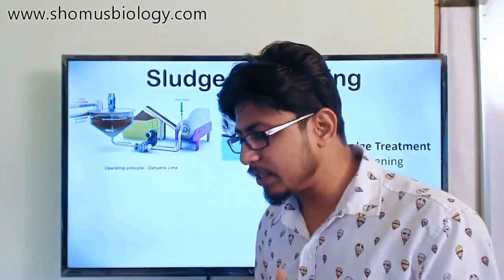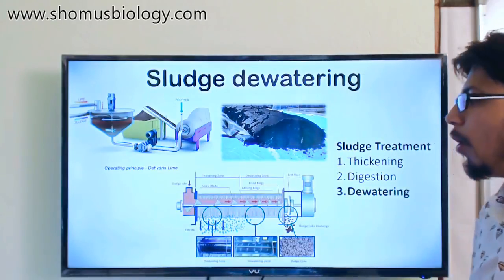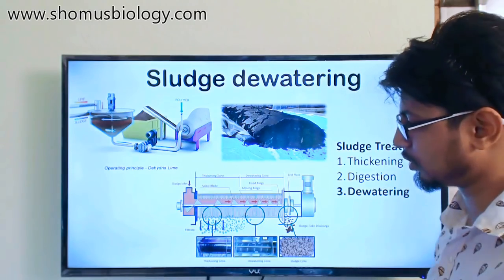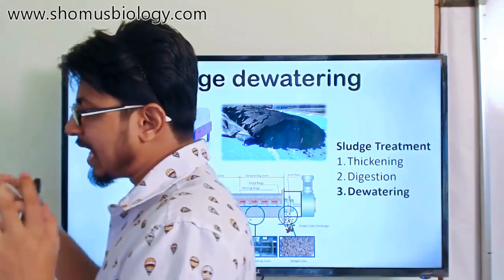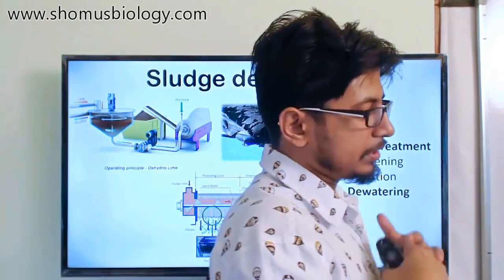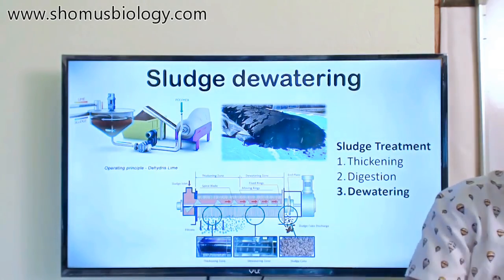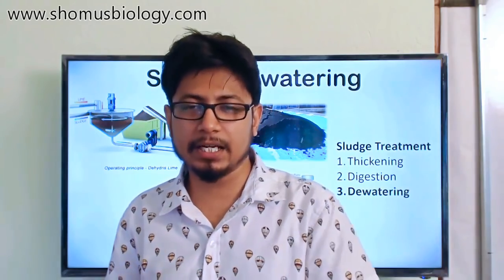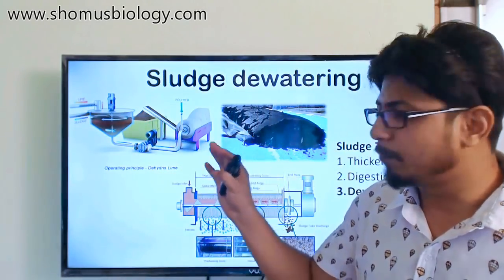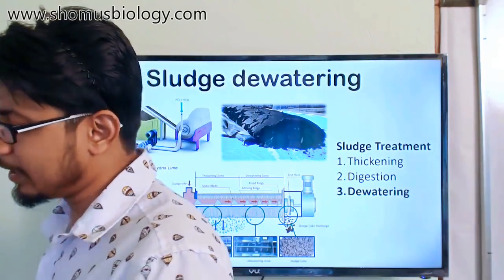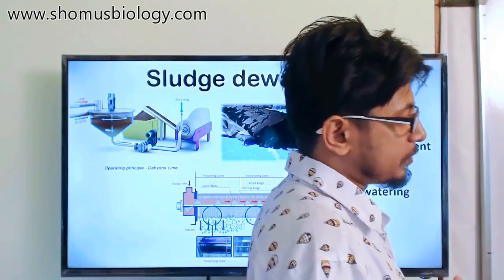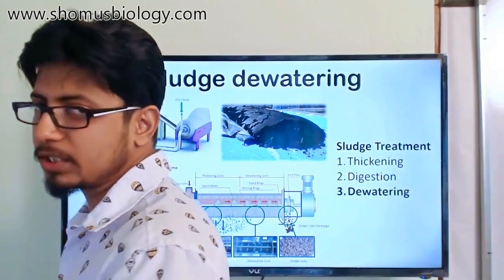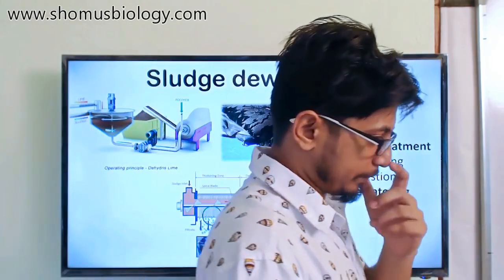Modern wastewater treatment facilities use a single machine that can handle all solids handling tasks. This machine has a thickening zone, a digestion zone, and a dewatering zone separately connected, so it performs all three steps sequentially. It is a long machine but handles the complete job on its own. Nevertheless, all three steps remain equally important: thickening improves handling, digestion stabilizes the material, and dewatering reduces transport costs.